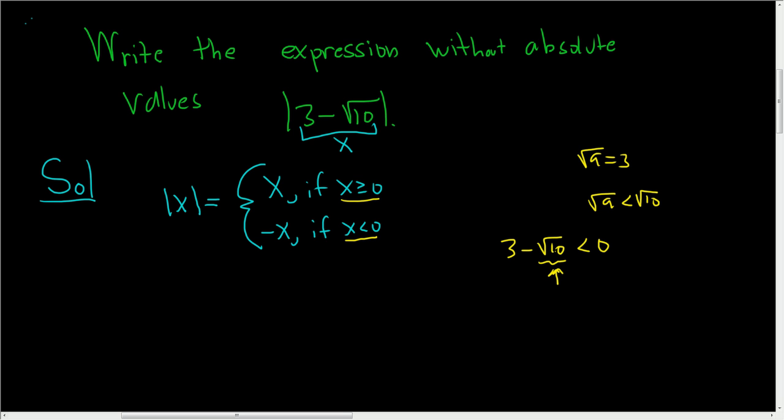So we have to take 3 minus the square root of 10, and using this as our x, we have to decide which condition to use. We know that x is less than 0, so that means we have to use this piece here.